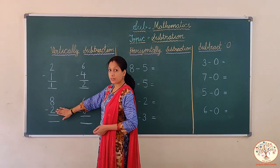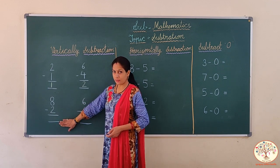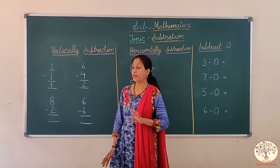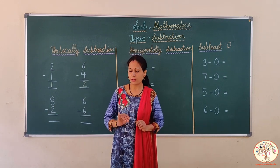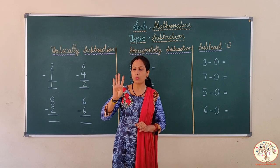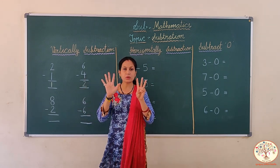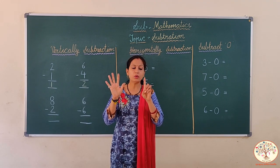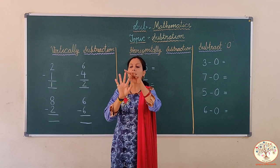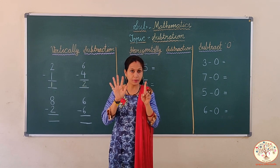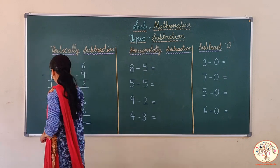Now 8 minus 2. Can you tell me the answer? Let's do it together. Open your 8 fingers: 1, 2, 3, 4, 5, 6, 7, 8. 8 fingers open कर ली. अब हम 2 fingers close करेंगे: 1, 2. How many fingers are left? Let's count: 1, 2, 3, 4, 5, 6. कितनी finger बची? 6. So the answer is 6. 8 minus 2 is equal to 6.